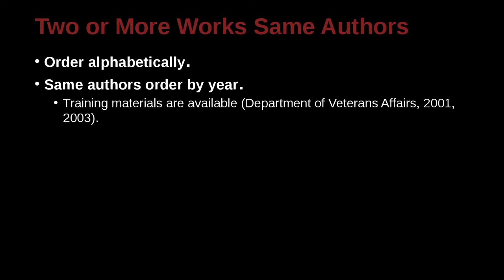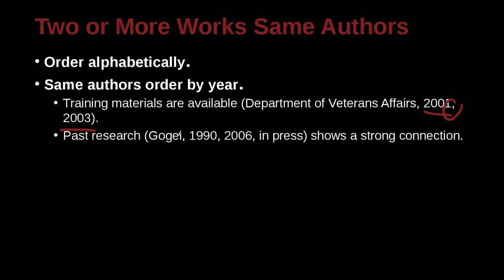Let's look at an example. 'Training materials are available' — Department of Veterans Affairs, 2001, 2003. This is not a person, but when we don't have a person, we can use the name of the organization. We have two papers, and we list them with a comma in year order: 2001, then 2003. Another example: 'Past research' — Google, 1990, 2006, in press. We have three papers ordered by earliest date first. 'In press' means it's at the publisher but not finished yet.